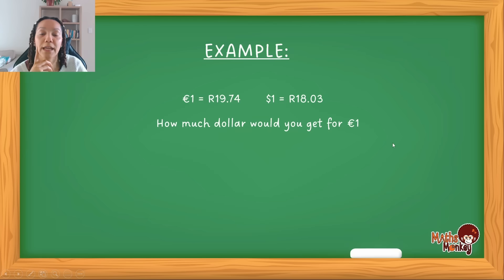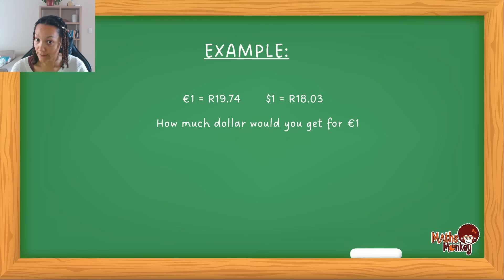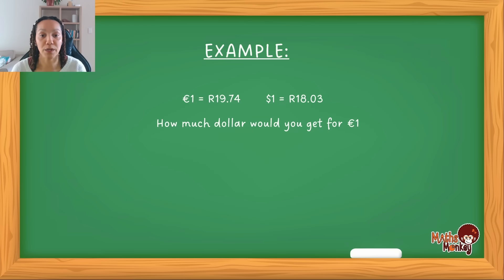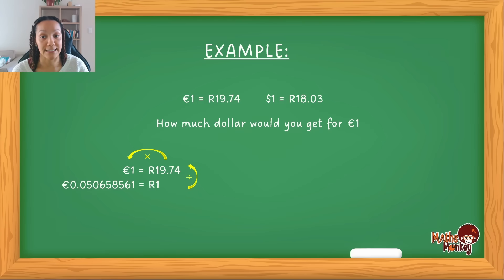Now let's look at this example. 1 Euro is equal to 19 Rand 74 cents, and $1 is equal to 18 Rand 3 cents. How much dollar would you get for 1 Euro? In this question we have three currencies: Euro, Dollar, and Rand. We need to find the relationship between the Dollar and the Euro. What we're going to do is equate both exchange rates to equal the same Rand unit — we're going to choose 1 Rand. For the Euro exchange rate, we use the LVN method to find how much Euro we get for 1 Rand, and it gives us 0.050658561 Euro.